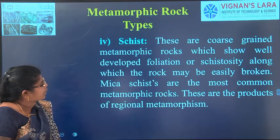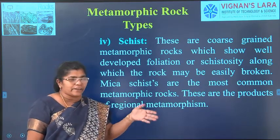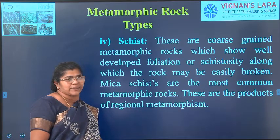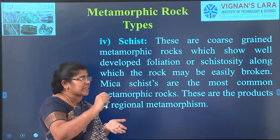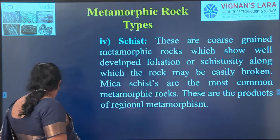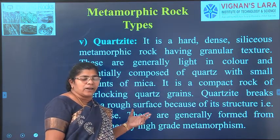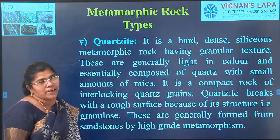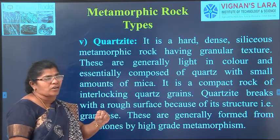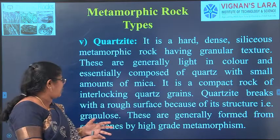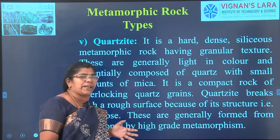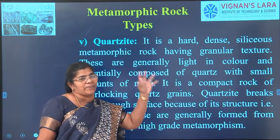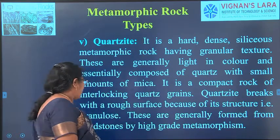Schist is a coarse-grained metamorphic rock showing well-developed foliations. It can be easily broken along the schistosity into small crystallized pieces — unlike slate which splits into thin sheets. Schist is a product of regional metamorphism. Next is quartzite — its main composition is silica, derived from quartz material. It is a hard, dense, siliceous metamorphic rock with granular texture. It is a very compact, strong rock with a rough surface when broken, generally formed from sandstone by high-grade metamorphism involving very high temperature and pressure.